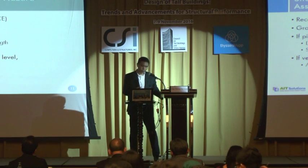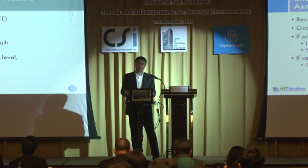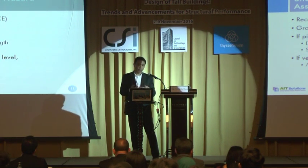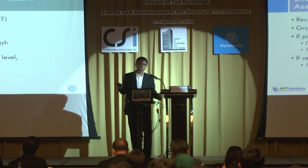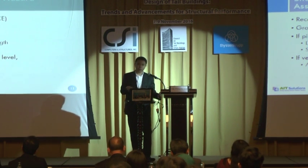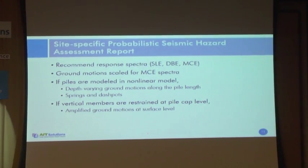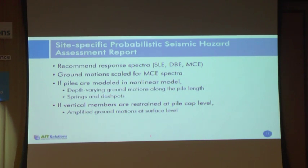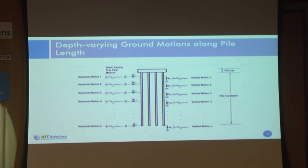If there is a pile foundation, there are two ways to model the foundation system in the linear model. One is to add all the piles in the linear model, in which case we have to apply the ground motions along the depth of the piles. Another simplified way is to provide pin or fixed supports at the end of vertical members at the pile cap level and apply the ground motions only at that level. We normally use the second option, which simplifies the model and applies the ground motion at the pile cap level. If we model piles in the linear model, we also have to model dashpots to model the damping effect of the soil, which is quite complicated.